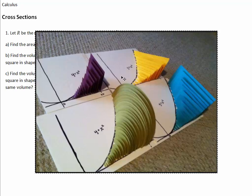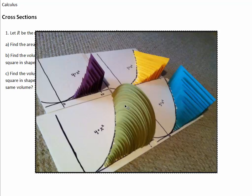On the white paper here, you've got the curve y equals x squared — that's just a parabola. The region is between that curve and the x-axis. In all four of these pictures, we have cross-sections that are perpendicular to the x-axis. These green ones are semicircles with a diameter in that region.